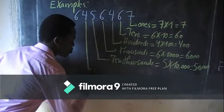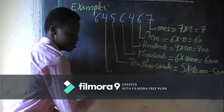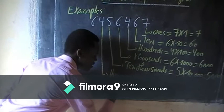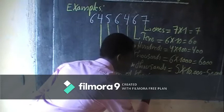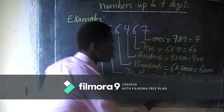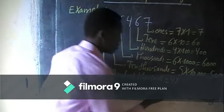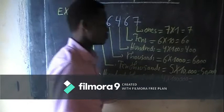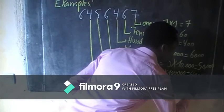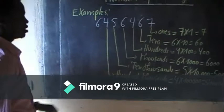Next, the place value of this four is hundred-thousands. To get the value of four, we take four times one hundred thousand. Four times one hundred thousand — counting the zeros: one, two, three, four, five — gives us four hundred thousand.